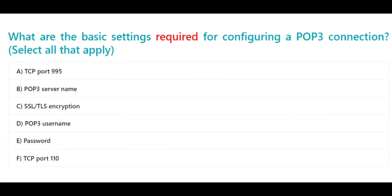What are the basic settings required for configuring a POP3 connection? Select all that apply: a. TCP port 995, b. POP3 server name, c. SSL/TLS encryption, d. POP3 username, e. Password, f. TCP port 110.